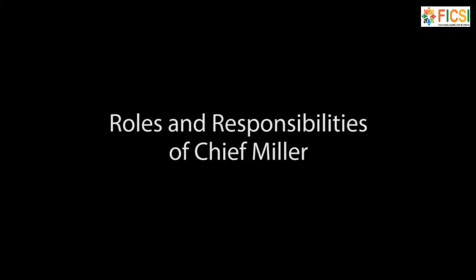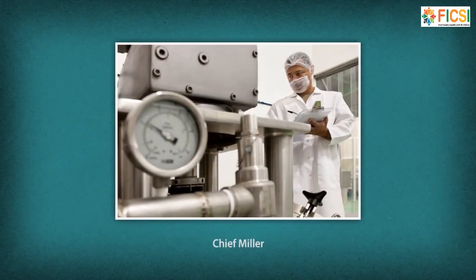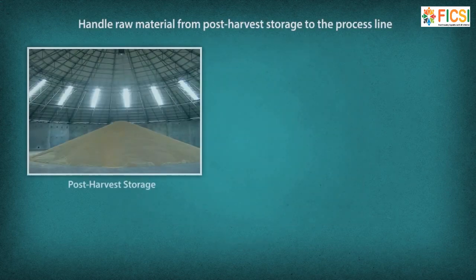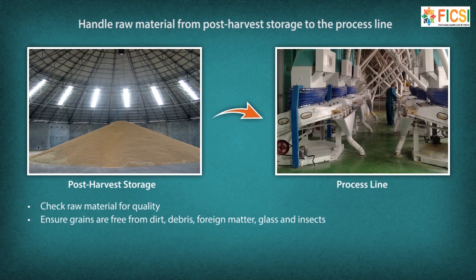Roles and Responsibilities of Chief Miller: The Chief Miller handles raw material from post-harvest storage to the process line, checks raw material for quality, ensures grains are free from dirt, debris, foreign matter, glass and insects, and ensures minimum loss of raw material.